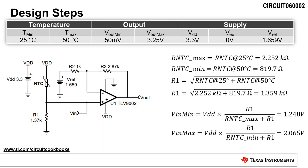The first design step is to calculate the resistance of R1. This is done by taking the square root of the sum of the NTC resistance at 25 degrees Celsius and 50 degrees Celsius. This equates to a resistance of 1.359 kiloohms. The next closest standard resistor value is 1.37 kiloohms, so we will use this value for the design, as shown by R1 in the schematic.